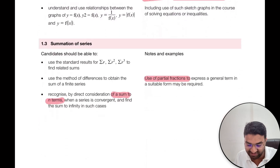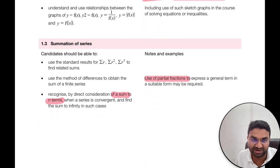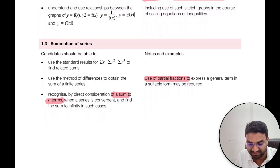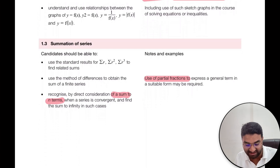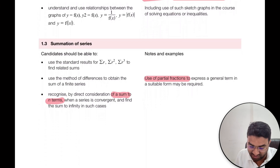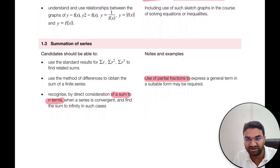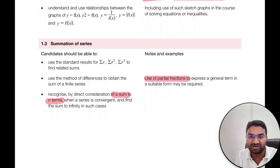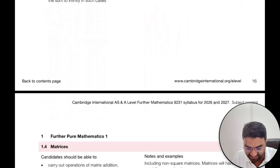Then summation of series. Particularly, we have summation of R, R squared, and R cubed — we need to find their relations and then sum to n. We also have to use the partial fraction form to calculate or find out the answers.